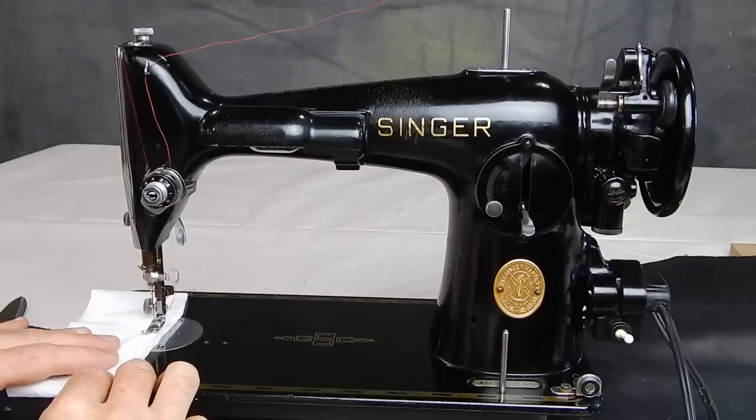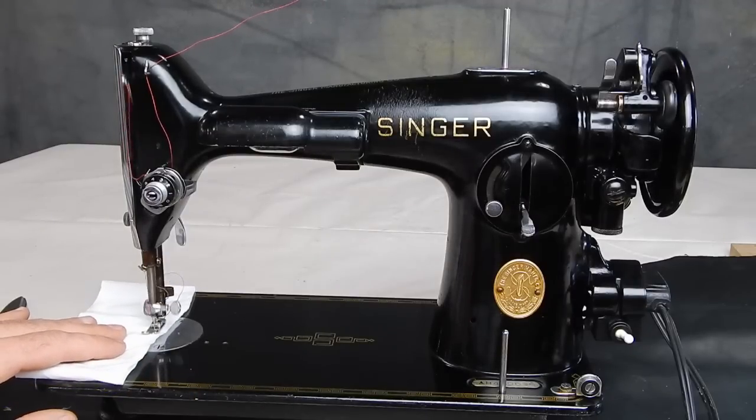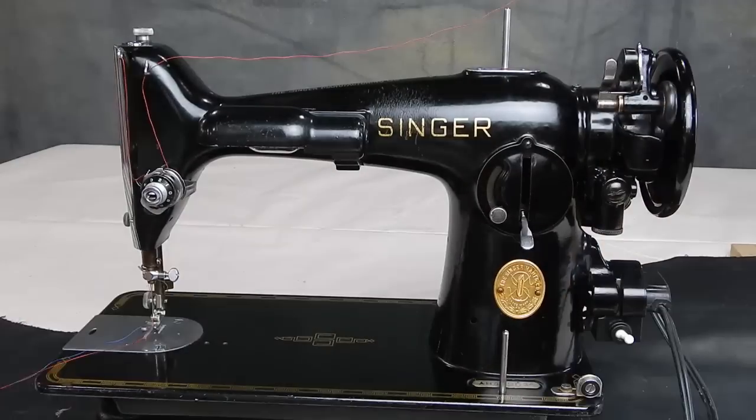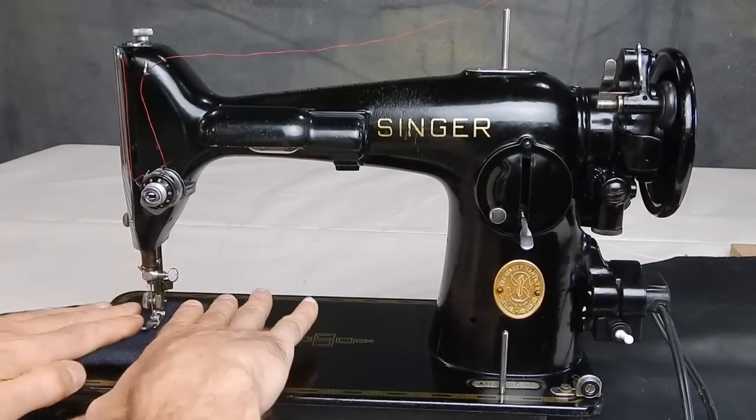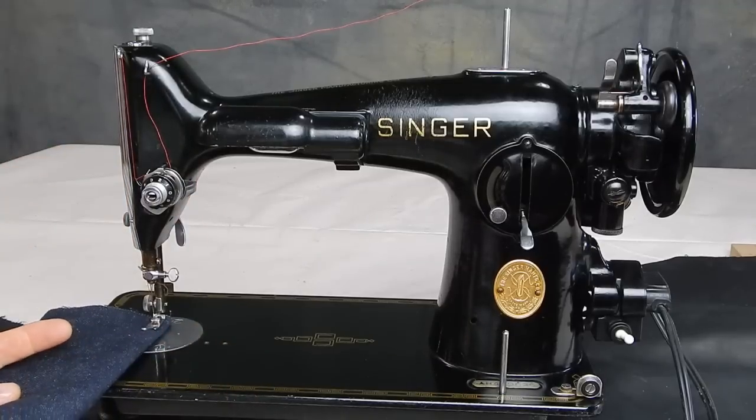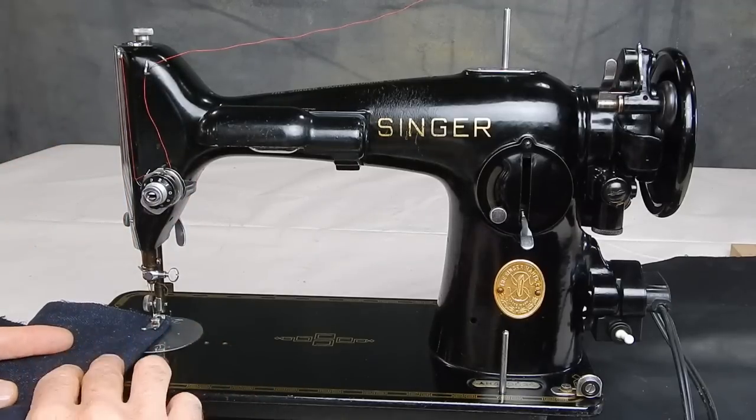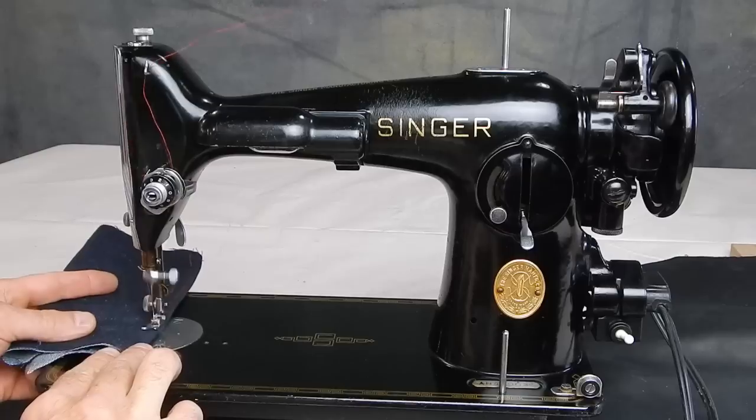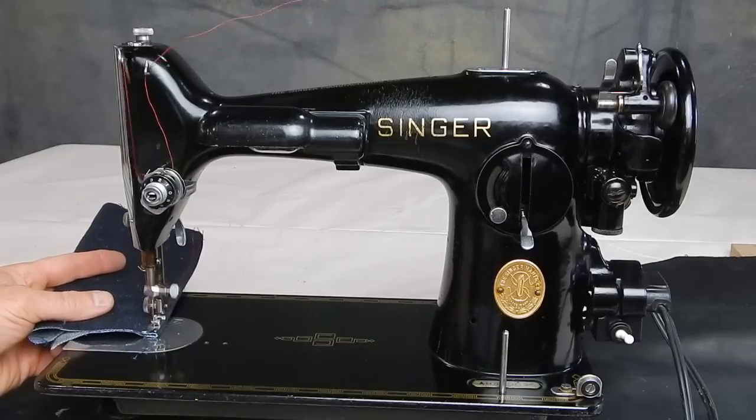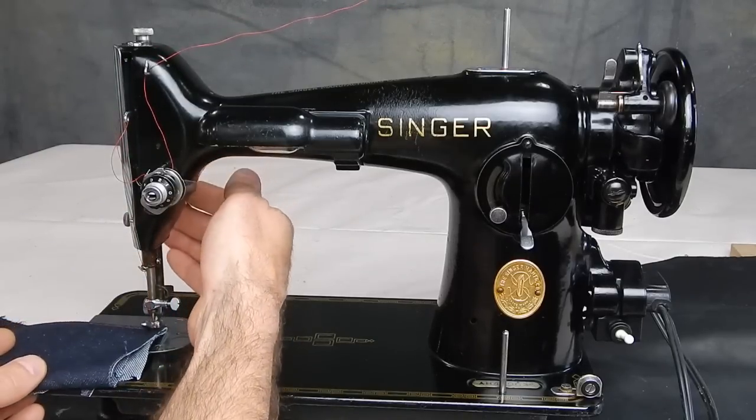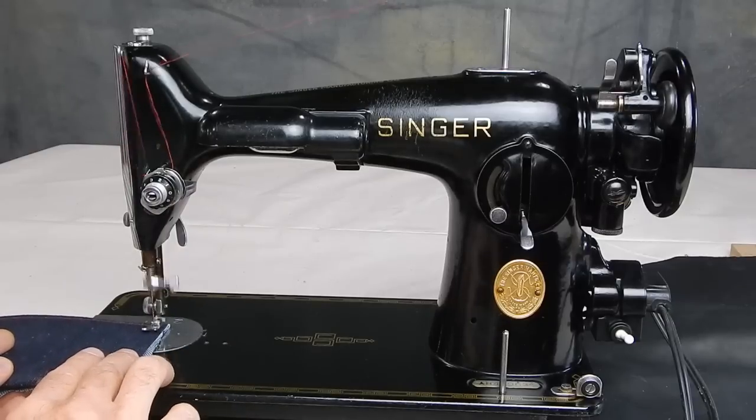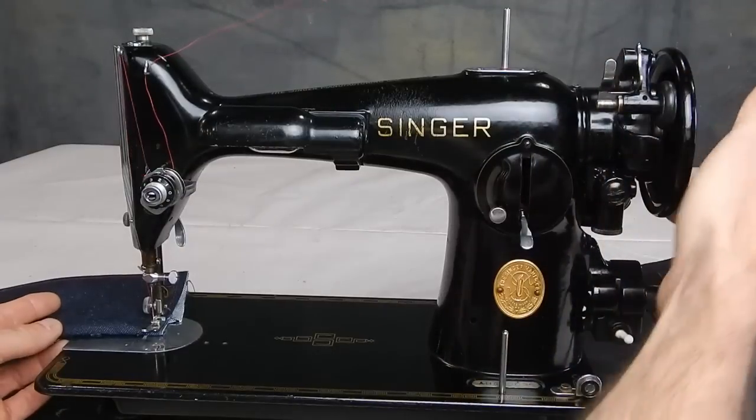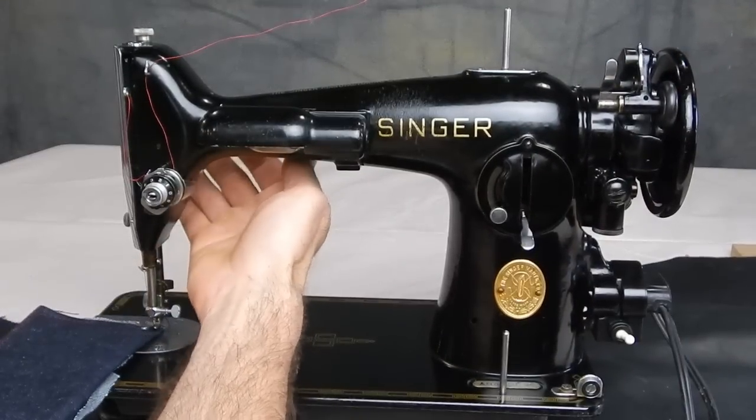These machines can sew slow and accurate, that's what you like, and we'll go at a fair clip as well. This is four layers. Goes through very easily. Nice thing about a 201 is they're very accurate. I like the small foot that they come with and you're just able to have a lot of control and sew a nice accurate stitch.